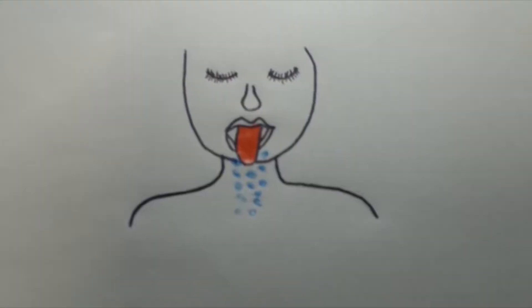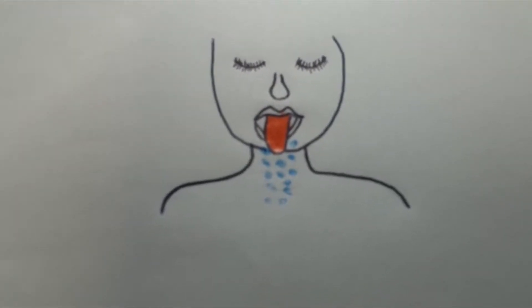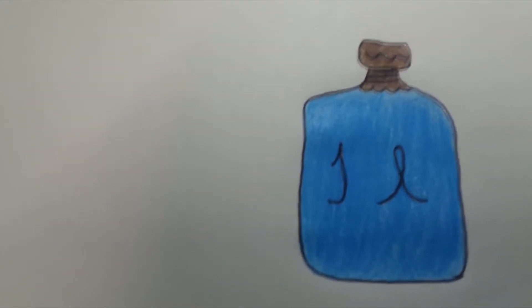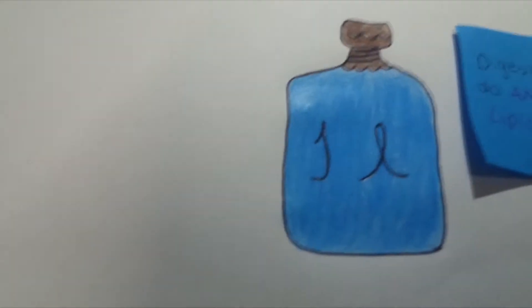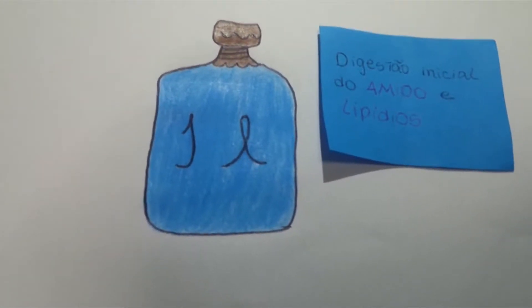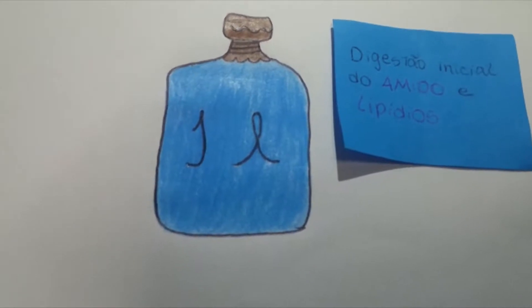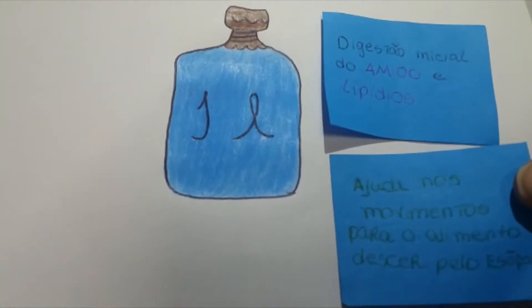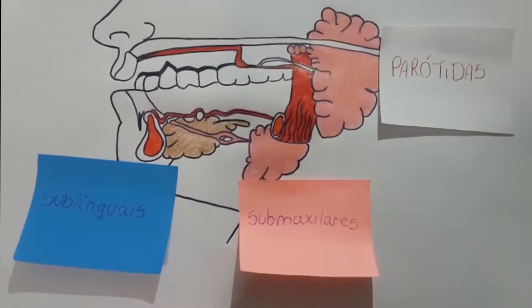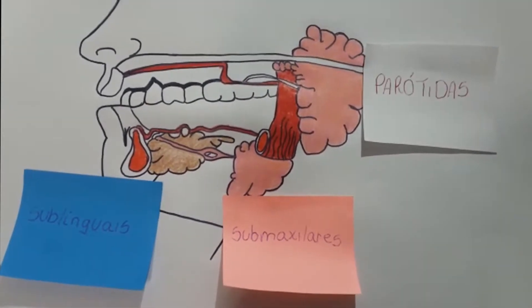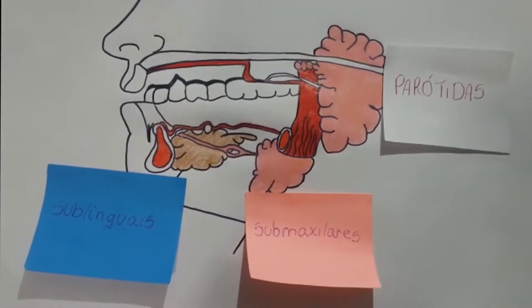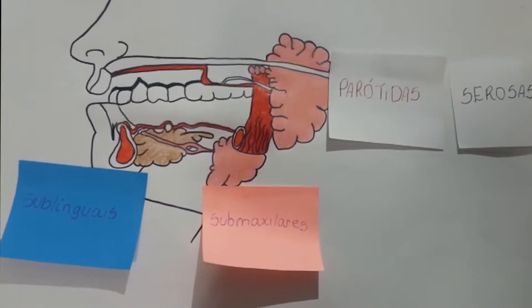Secreção salivar. A saliva é produzida por glândulas salivares, sendo secretado aproximadamente 1 litro de saliva por dia. Suas principais funções são a digestão inicial do amido e dos lipídios pelas enzimas salivares, a diluição e tamponamento dos alimentos ingeridos, e a lubrificação do alimento ingerido com o muco. As principais glândulas salivares são parótidas, e as parótidas são compostas por células serosas, secretando solução composta por água, íons e enzimas.